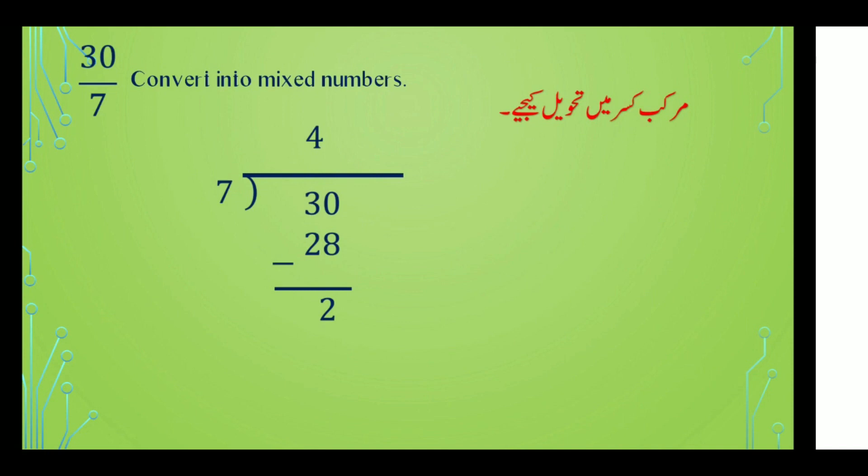اس سے پہلے ہم نے جو example بتائی تھی اس میں دیکھا تھا کہ quotient اور reminder کہاں آئے گا — quotient, remainder upon divisor — اس formula سے answer ملے گا۔